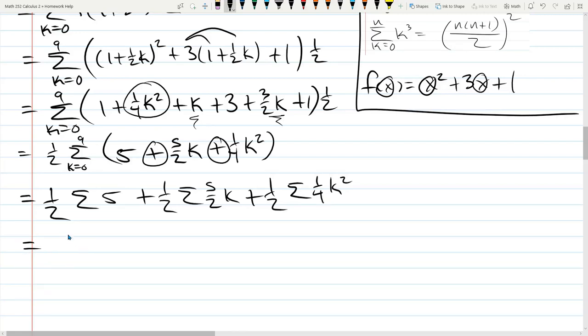Let's go ahead and factor now. So I'm going to bring the 5 to the front. So we have 5 halves summation of a bunch of 1s. And now I am going to be applying formulas. Factor out the 5 halves times 1 half is 5 fourths summation K, K equals 0 to 9. Plus half times 1 fourth is 1 eighth summation K squared, K equals 0 to 9.